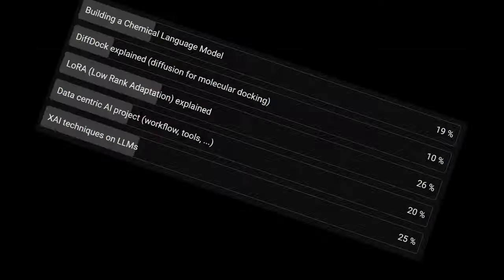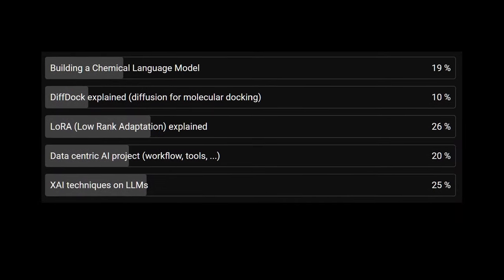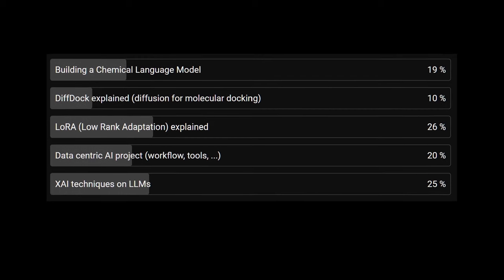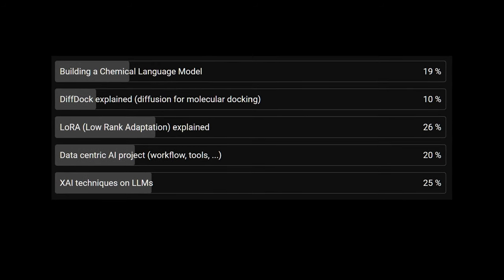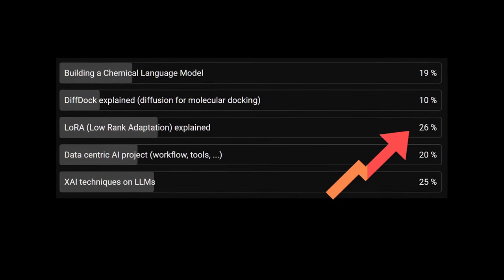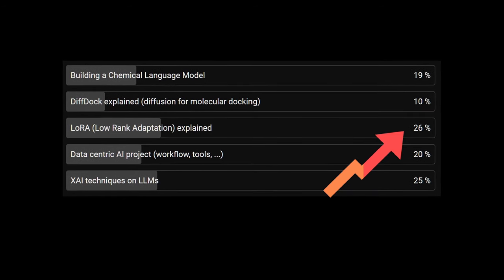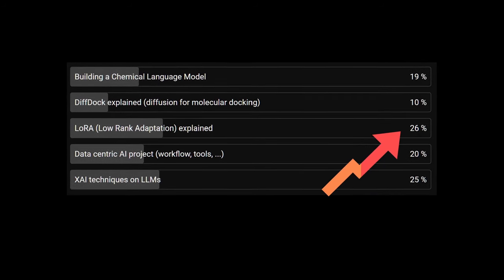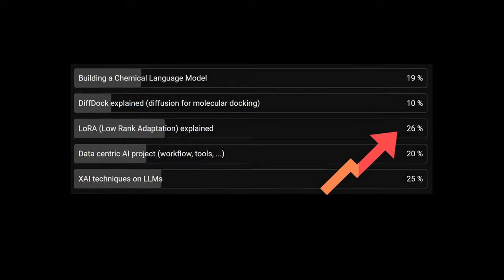Hi everyone, and welcome to another video. Based on the recent voting, this video will be all about low-rank adaptation, a method for fine-tuning very large deep learning models. But not only that, we will also talk about some foundations on how to deal with large models in general.